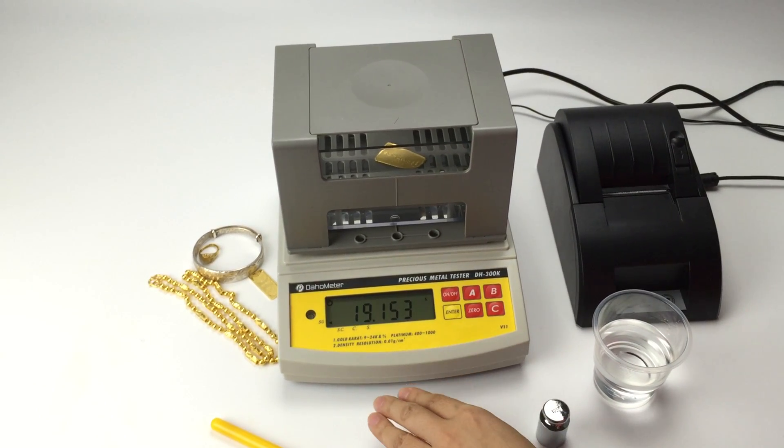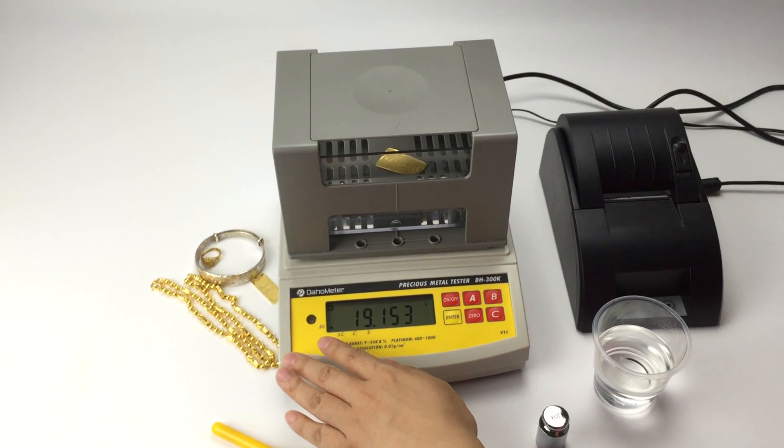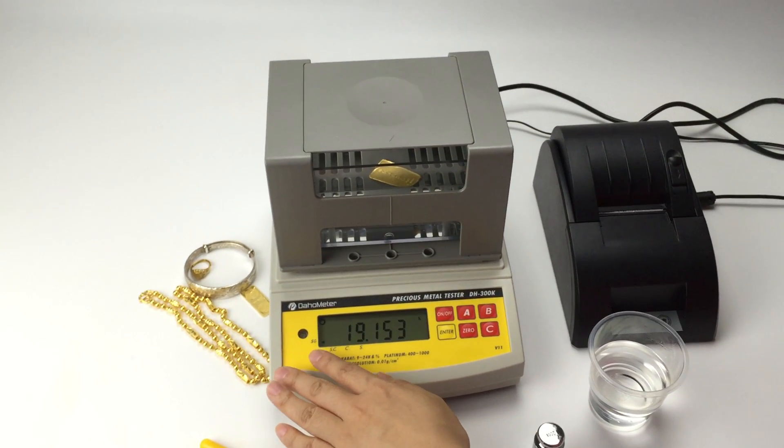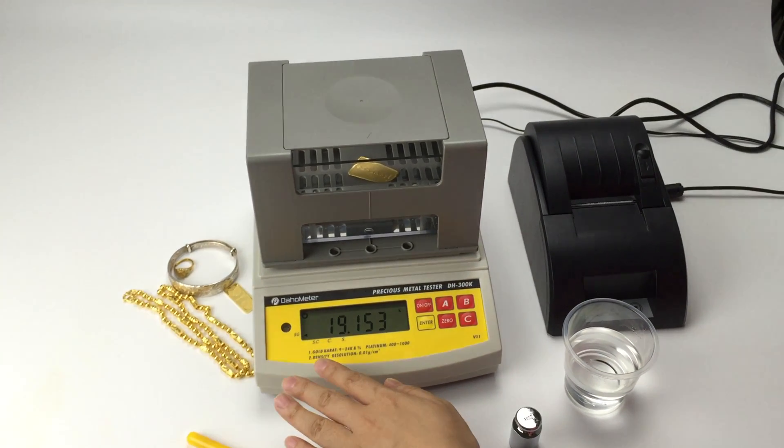Press A again. Then the arrow is directed to SG. SG is the specific gravity for this sample.